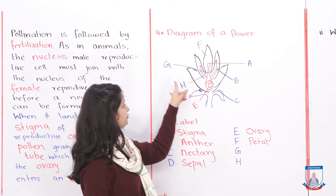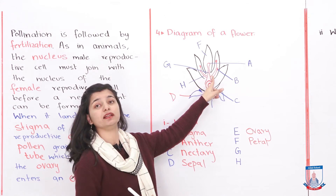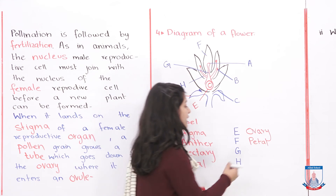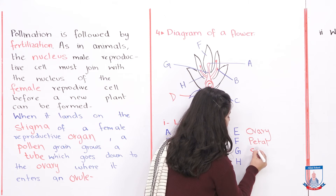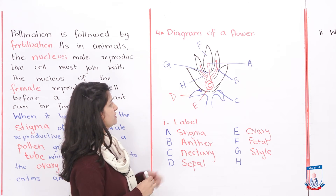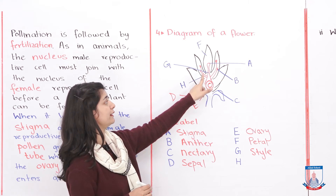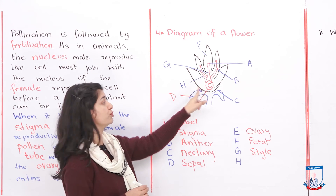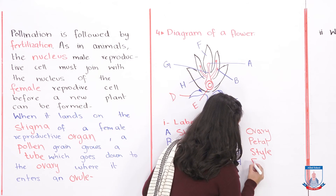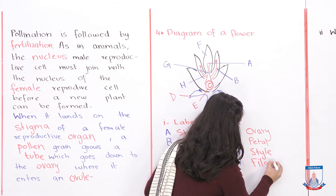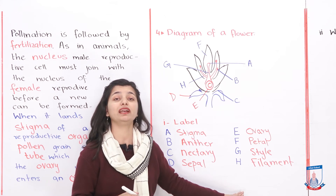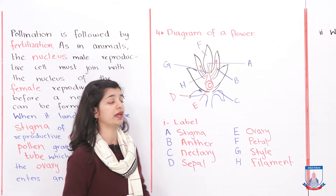Part G is the style — the tube connecting the stigma down to the ovary, which is part of the carpel structure. Part H is connected to the anther — that would be the filament. The filament is part of the stamen, and there are pollen grains on the anther attached to the filament.